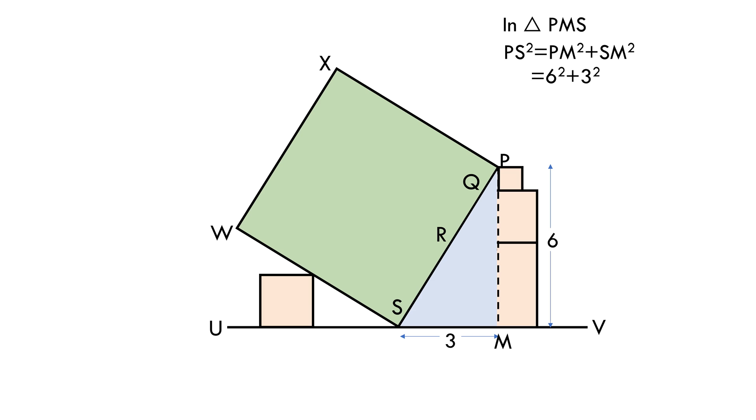Because one side of the green square is PS, area of green square can be given by 6 square plus 3 square which is equal to 36 plus 9 equals to 45 square units.